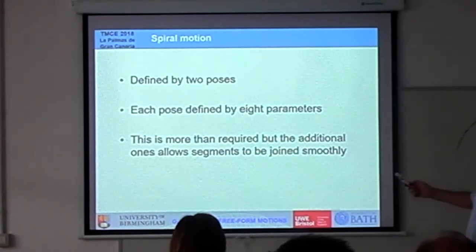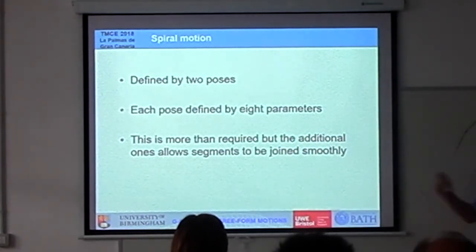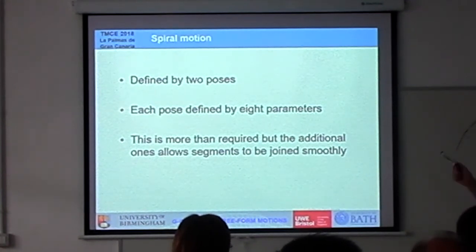So again, we're starting to get a little more complicated. Again, we're really defining two poses, start point, stop point. We need to generate some more information actually in the G-codes.